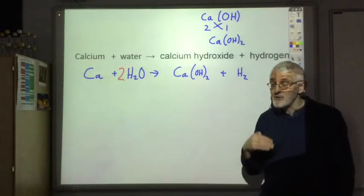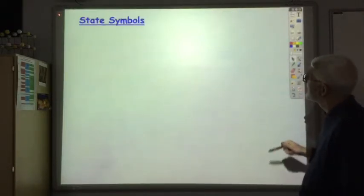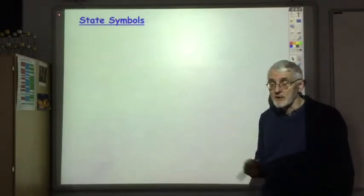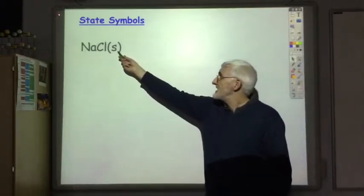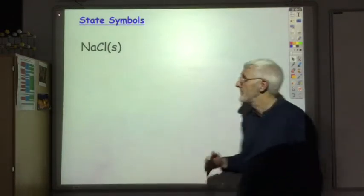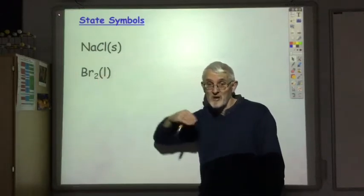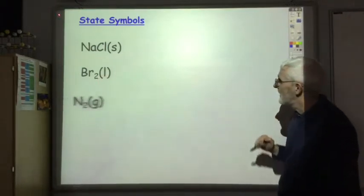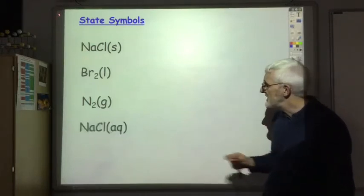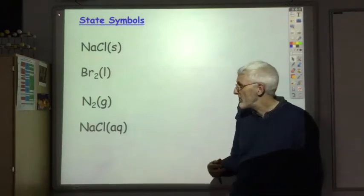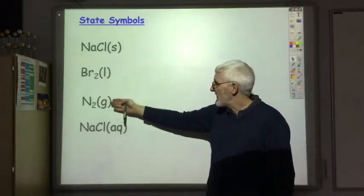Once we've got a balanced equation we can do calculations based on it, which we'll look at in the next video. Sometimes we add state symbols to chemical equations. The symbol (s) tells us the substance is solid, for example sodium chloride solid. (l) means the substance is a liquid — bromine is one of only two elements that is a liquid at room temperature. (g) means the substance is a gas, for example nitrogen gas. And (aq) means the substance is dissolved in water, so sodium chloride dissolved in water. So: solid, liquid, gas, and dissolved in water.